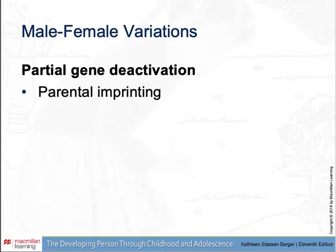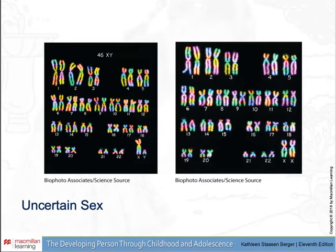Male-female variations include partial gene deactivation, which happens when one half of a gene pair switches off completely, possibly causing a problem if the remaining gene is destructive. Parental imprinting can also happen — a specific variation passed from mother or father to a child that can result in strange syndromes. Occasionally a baby is born with ambiguous genitals, requiring chromosome analysis to confirm whether the 23rd pair is XY or XX. The karyotypes shown indicate a normal baby boy and girl.